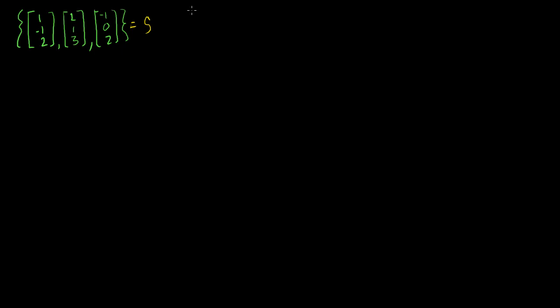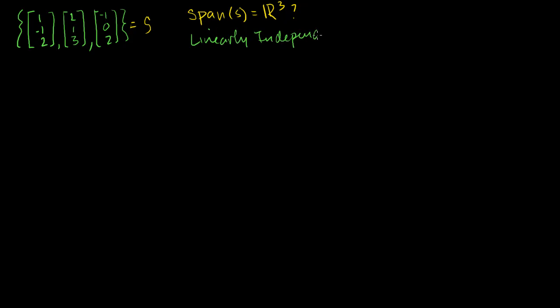So the first question I'm going to ask about the set of vectors S — and they're all three-dimensional vectors with three components — is: is the span of S equal to R3? It seems like it might be. If each of these adds new information, it seems like maybe I could describe any vector in R3 by some combination of these three vectors.